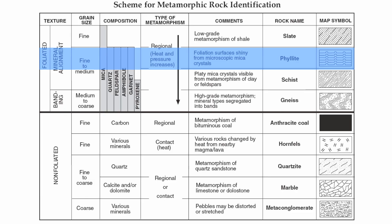Now you have a rock called phyllite. Instead of just mica, now you have quartz, feldspar, amphibole, and garnet. In terms of its composition, still relatively small crystals, and again you still have the special type of foliation called mineral alignment.